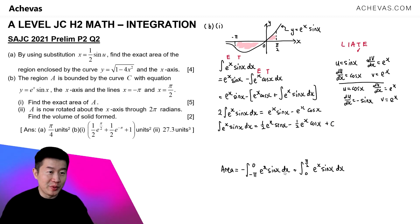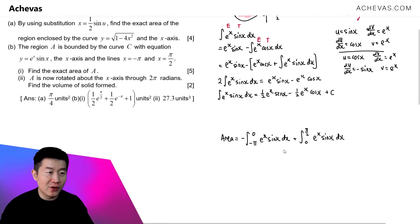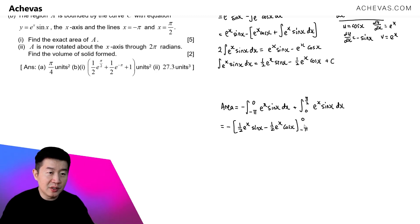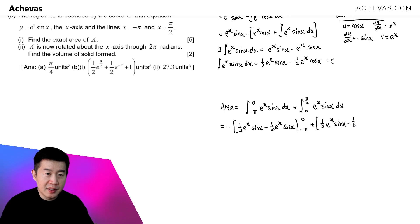Having this result saves us from doing the tedious integration twice. We now apply it to the definite integrals. The expression we use is ½eˣsin(x) - ½eˣcos(x), without the +c, applied with limits -π to 0 (with the negative sign in front), plus the same expression applied from 0 to π/2.